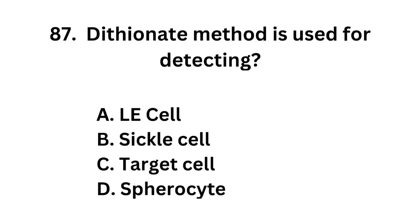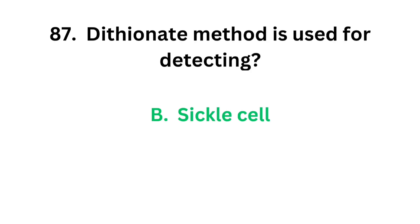Question number 87. Dithionate method is used for detecting: Option A: LE cell. Option B: Sickle cell. Option C: Target cell. Option D: Spherocyte. Dithionate method is used for detecting sickle cell. The correct answer is option B.